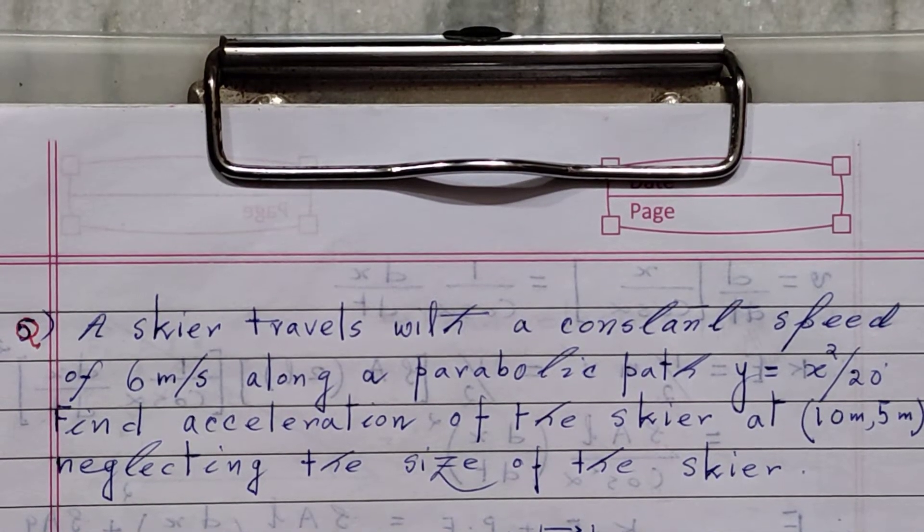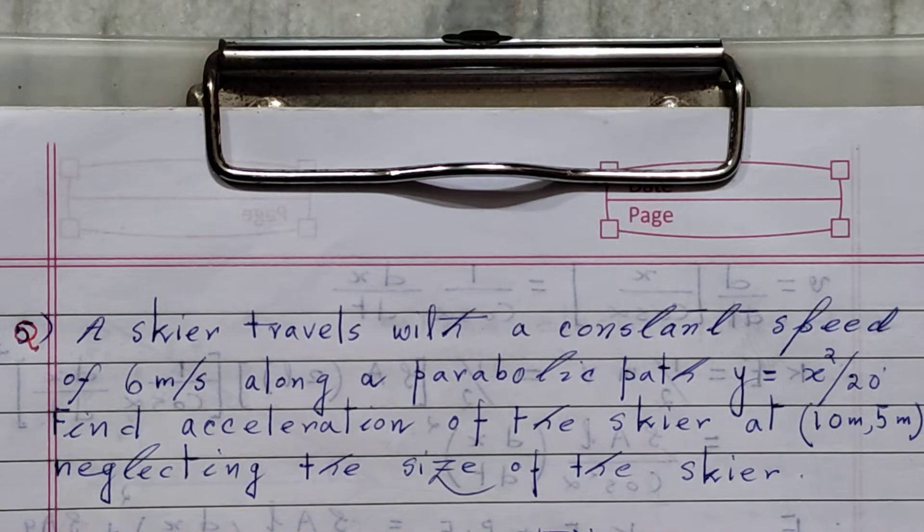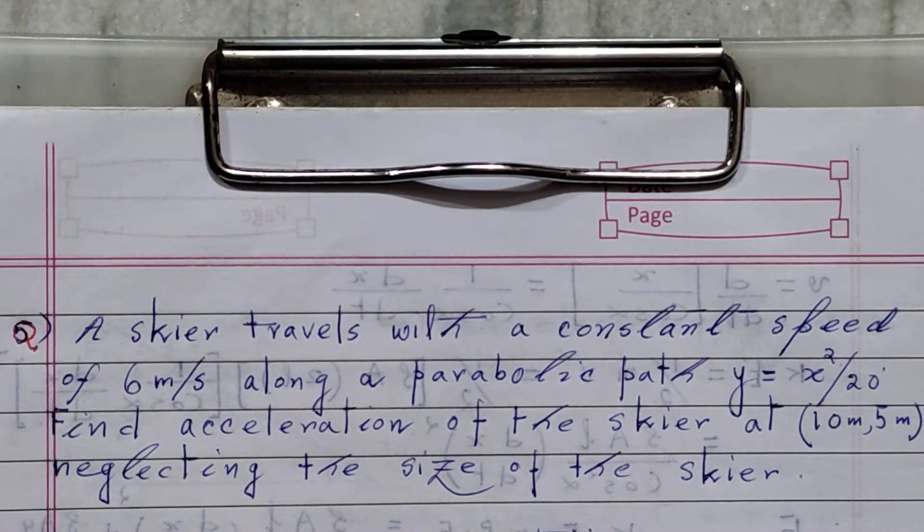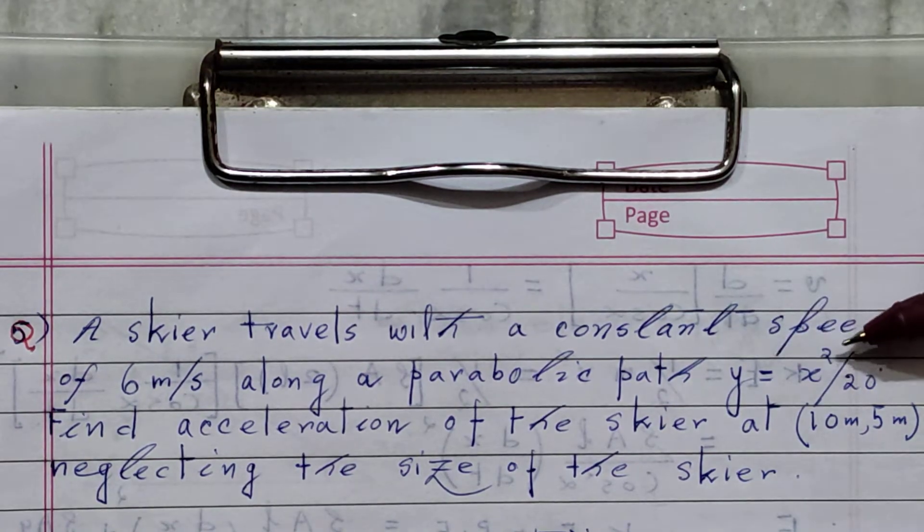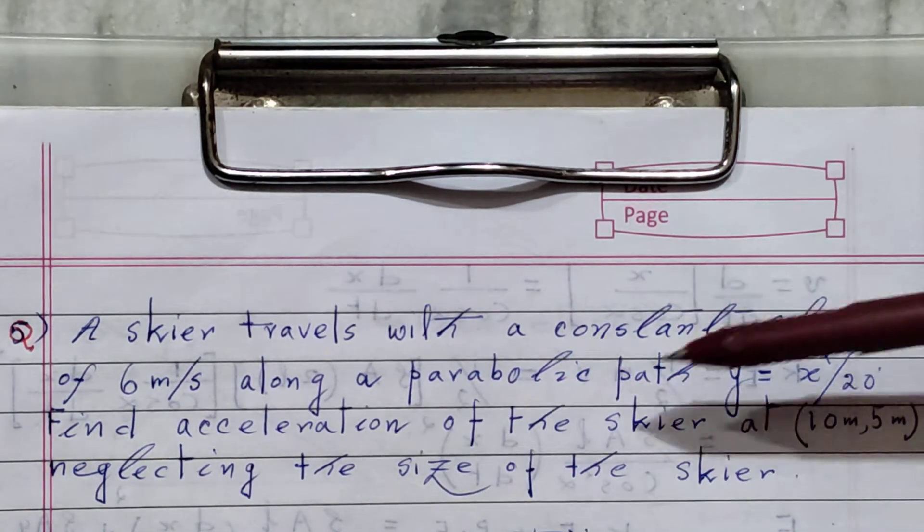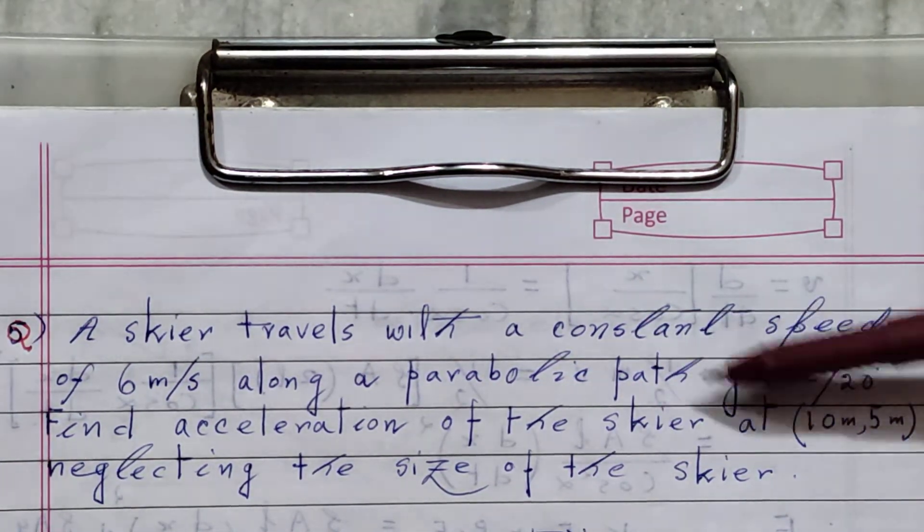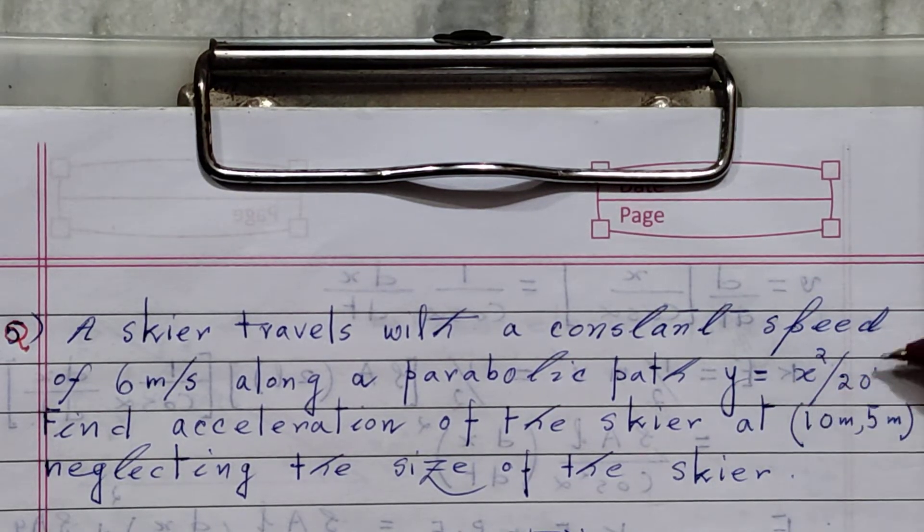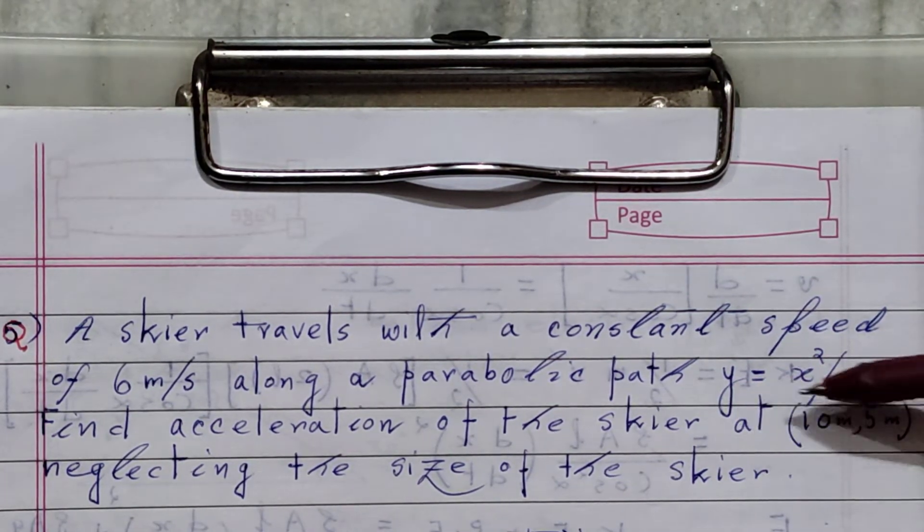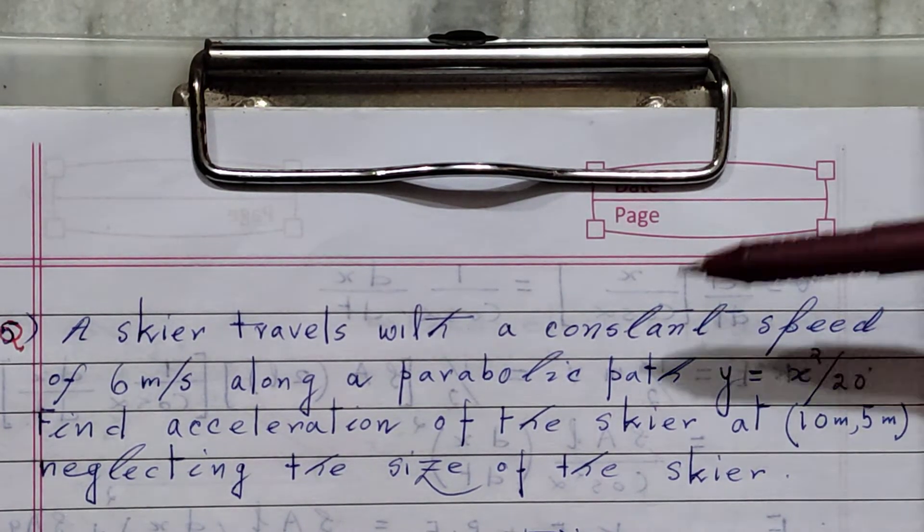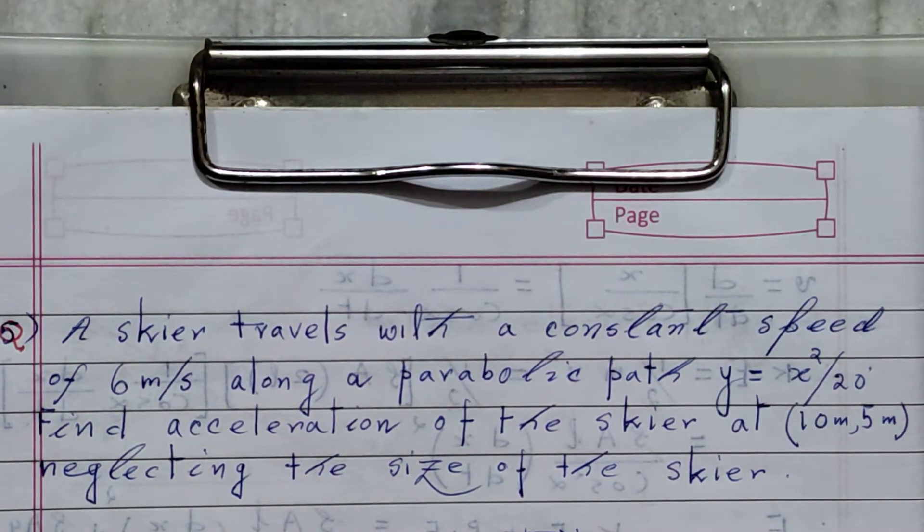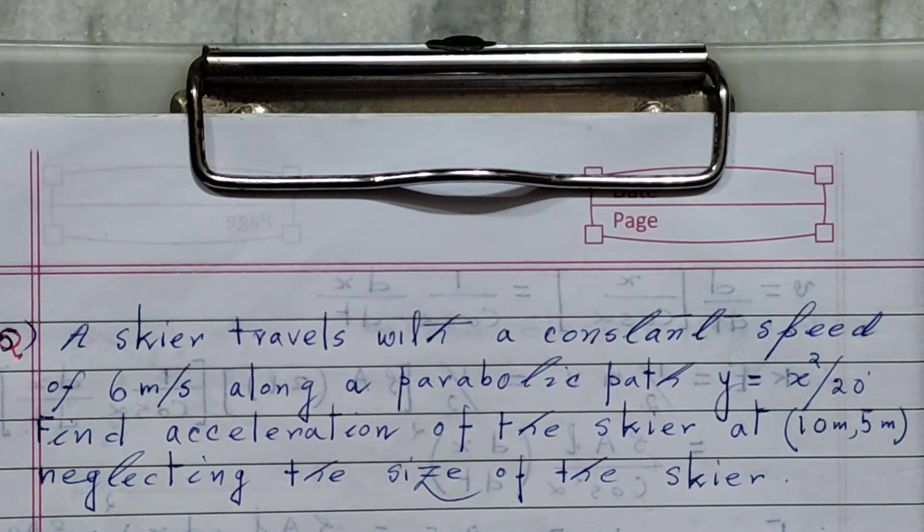Hello everyone, welcome to Physics is Fun. So what's our today's problem? A skier travels with a constant speed of 6 meter per second along a parabolic path, and the equation of that parabolic path is y equals x squared by 20. Find the acceleration of the skier at (10, 5).